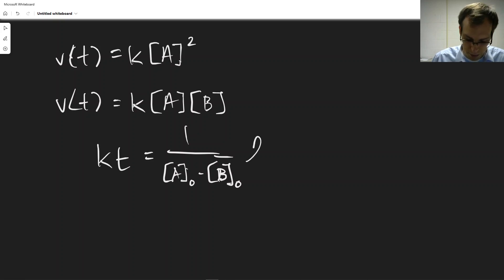And then this is multiplied by a natural log expression of the concentration of A, times the concentration of B₀, divided by the concentration of B, times the concentration of A₀.